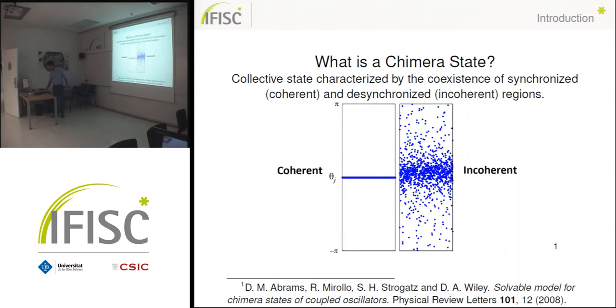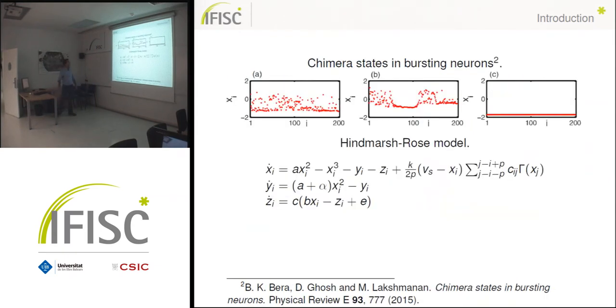I show you a few examples, like for example, chimera states that have been found in a model of bursting neurons. In this image we have a state in which all of them are incoherent. In C we have a coherent region and in B we have what would be the chimera, which is a localized structure of incoherent oscillators and coherent oscillators.